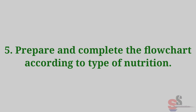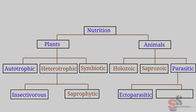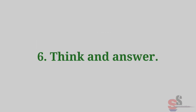Question 5: Prepare and complete the flow chart according to type of nutrition. Nutrition — In plants: Autotrophic and Heterotrophic (Symbiotic). In animals: Holozoic, Saprozoic, and Parasitic. Under Heterotrophic: Insectivorous and Saprophytic. Under Parasitic: Ectoparasitic and Endoparasitic.